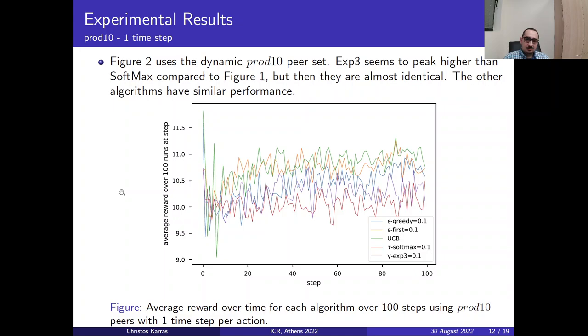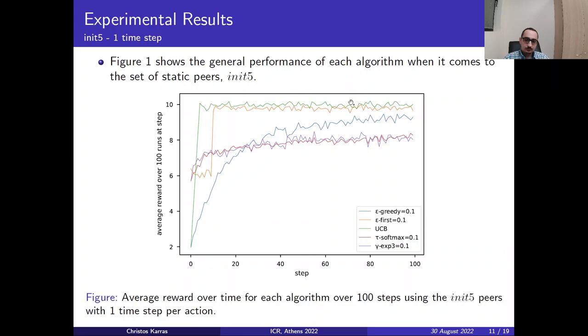Moving on to another experiment we have the same algorithms utilizing the second set of peers we previously introduced, meaning the PROD10 peer set. The EXP3 algorithm seems to peak higher than the softmax compared to the previous figure, but then they are almost identical. EXP3 is with purple color and the softmax is with red color. They seem to follow the same path of reward. But what we can also observe here is that the average reward on the UCB peaked at approximately 12 rewards while before it was close to 10.